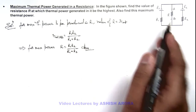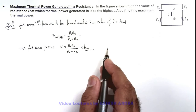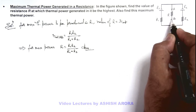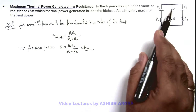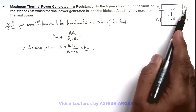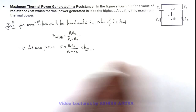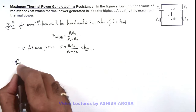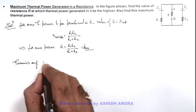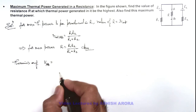The resistance at which thermal power in it is maximum has been found. If we wish to find the maximum value of this power, we first calculate the Thevenin's EMF across terminals A and B, where we consider this R is removed. These two batteries of EMFs E1 and E2 will then be taken in parallel.